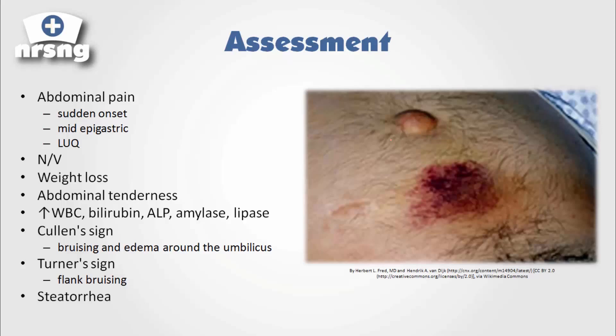For assessment, the patient is going to have sudden-onset abdominal pain in the mid-epigastric and left upper quadrant area. They'll experience nausea and vomiting, weight loss, and abdominal tenderness. We're going to see an increase in white blood cells, bilirubin, ALP, and increases in amylase and lipase.